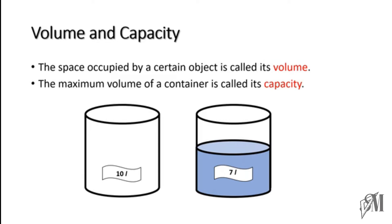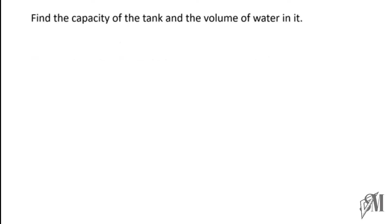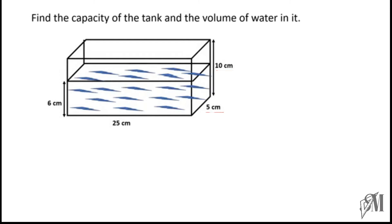Hope you understood the difference between volume and capacity. Now let's look into a question: find the capacity and the volume of the tank. To find it, you should know the equation — since this is a cuboid, the equation we have to use is length × breadth × height.